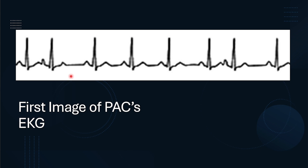Here's an image of PACs. You can see we have a sinus rhythm — we have the P wave following the QRS complex and the PR interval. We can already tell it's less than 0.2 seconds, and the QRS complex is less than 0.12 seconds. There's only one P wave and one T wave per QRS. But occasionally we have these weird little bumps where we can visualize an extra P wave, telling us the atrium is acting up — we have a PAC, followed by that beat.